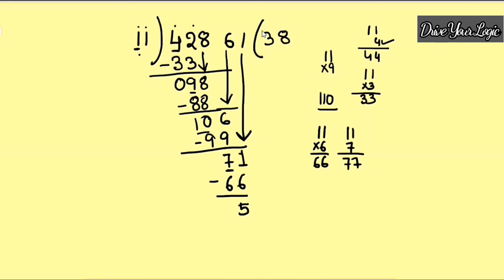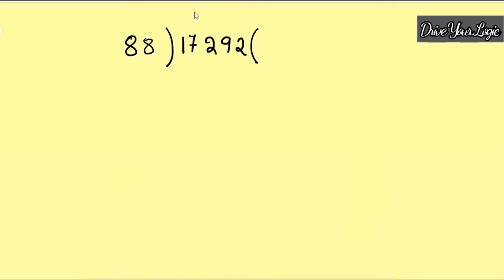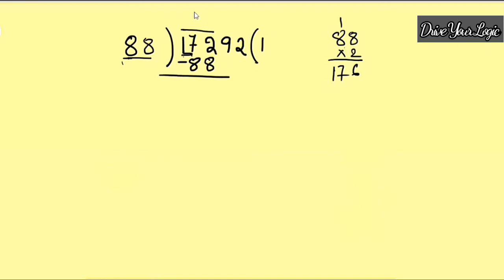Let me show one more example with a bigger number: 88 into 17292. Here the divisor is two digits, but if we take two digits of the dividend — 17 — it is smaller than 88, so we can't take just two digits. We take three: 172. Now look at the last digit of the divisor and the last digit of this portion. With what do you multiply 8 to get near that last digit? Try 2: 8 into 2 gives 16 — so 88 into 2 is 176, carry 1, giving 177 — that's more than 172. So take the number before: 1. 88 into 1 is 88. Now do the subtraction.